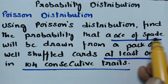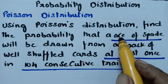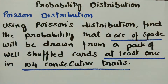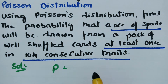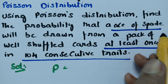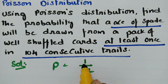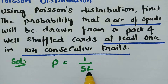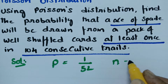The ace of spades — there is only one ace in the set of spades. So there is only one card, and how many cards are there in total? 52 cards. Therefore our p value — the probability of choosing an ace of spade from a well shuffled pack of cards — there is only one ace of spade out of 52 cards. So the probability p is given as 1/52. The number of consecutive trials n is equal to 104.